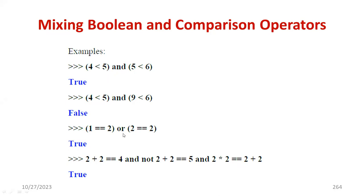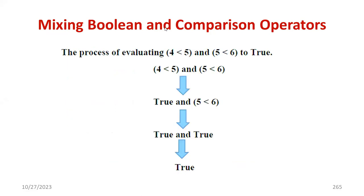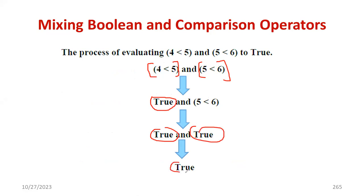In this fashion, you can also perform OR and NOT operations. The process works as follows: 4 less than 5 will be executed first, then 5 less than 6 will be executed. Is 4 less than 5 correct? Absolutely true. Is 5 less than 6 true? Absolutely true. So true AND true gives a result of true. This is how the combination of Boolean and comparison operators works.